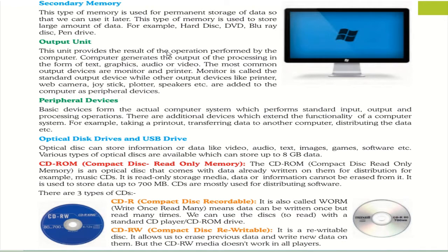Next are peripheral devices. These are additional devices which extend the functionality of a computer system — for example, taking a printout, transferring data to another computer, distributing data, etc. Examples include USB and optical disk drives. These are used while operating the computer system; webcam is also a peripheral device. Devices other than the main computer systems are known as peripheral devices.